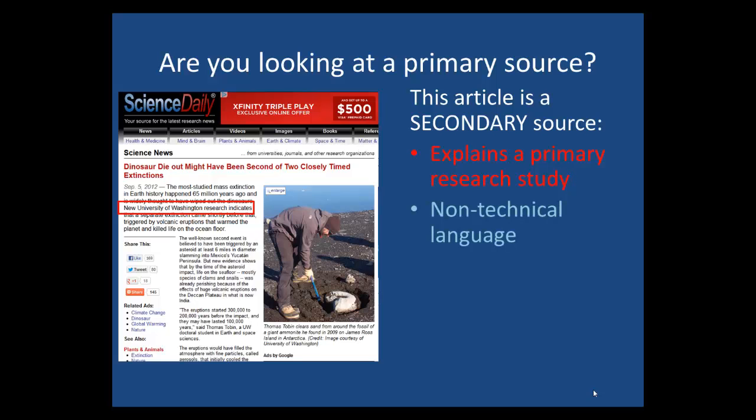It does not assume that the reader is aware of the topic, and so it defines terms. Like here, the eruptions would have filled the atmosphere with fine particles called aerosols. A primary source would assume high-level knowledge on the part of the reader.